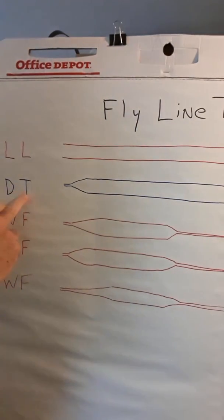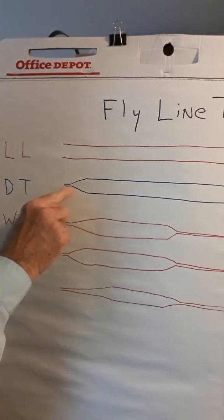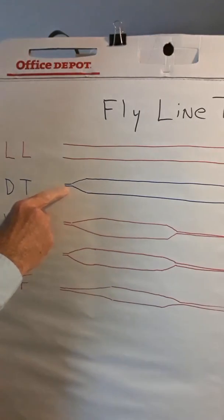Then there is the double taper fly line, which has, you'll notice, a short section where a very, very thin fly line. That is where you tie your leader to. It can be anywhere from 6 inches to 18 inches long.